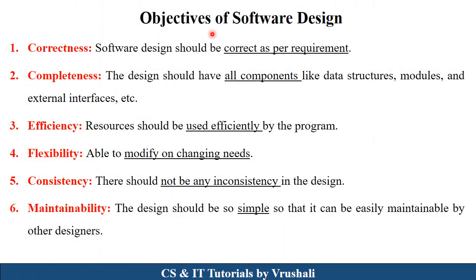The next one is the objectives of software design. While generating a design, you must follow all these six objectives. The first one is correctness — your software design should be implemented using correct requirements as per the SRS document. The next one is completeness — the design should have all the components like data structures, modules, database, user interface, and external interface, so everything is clearly mentioned in the design.